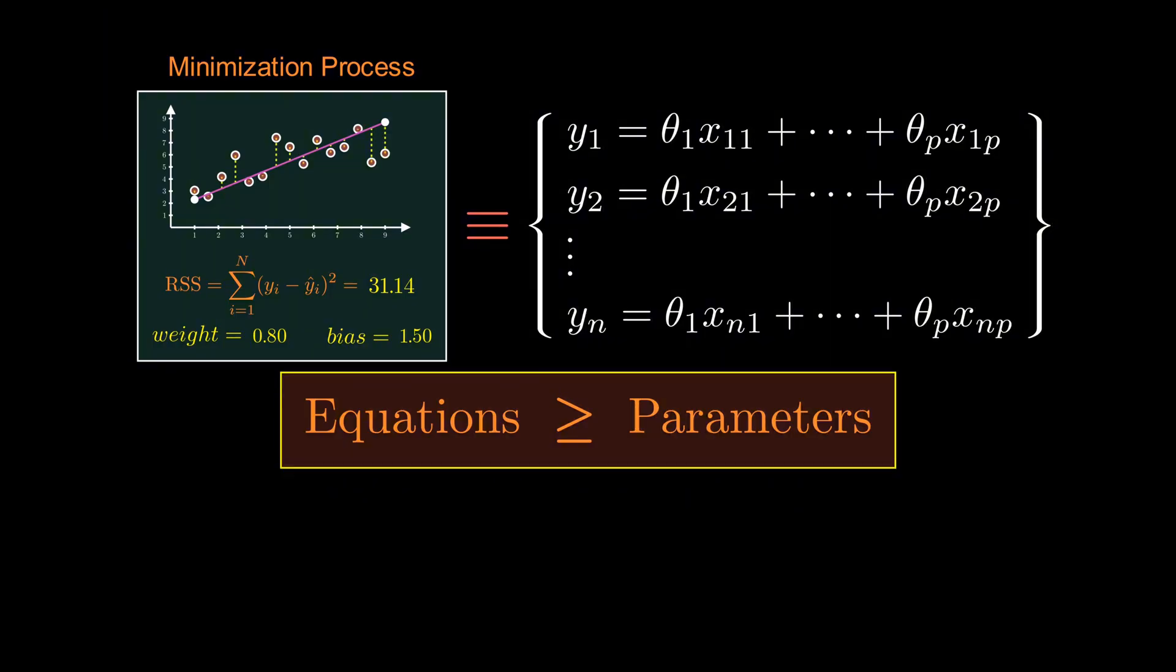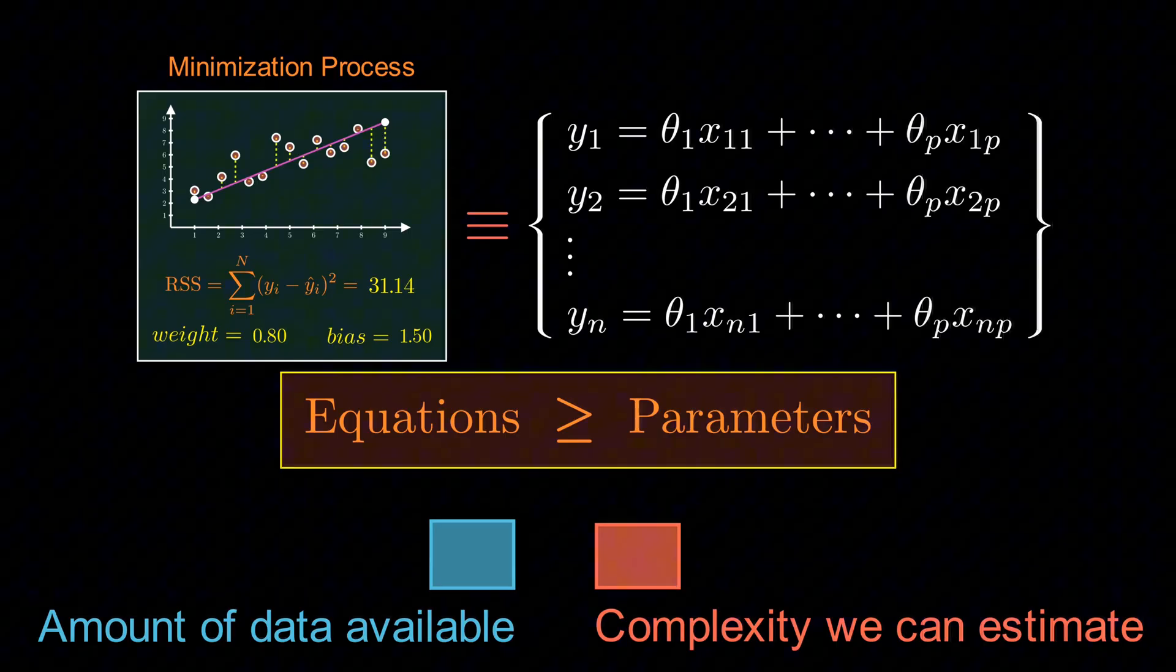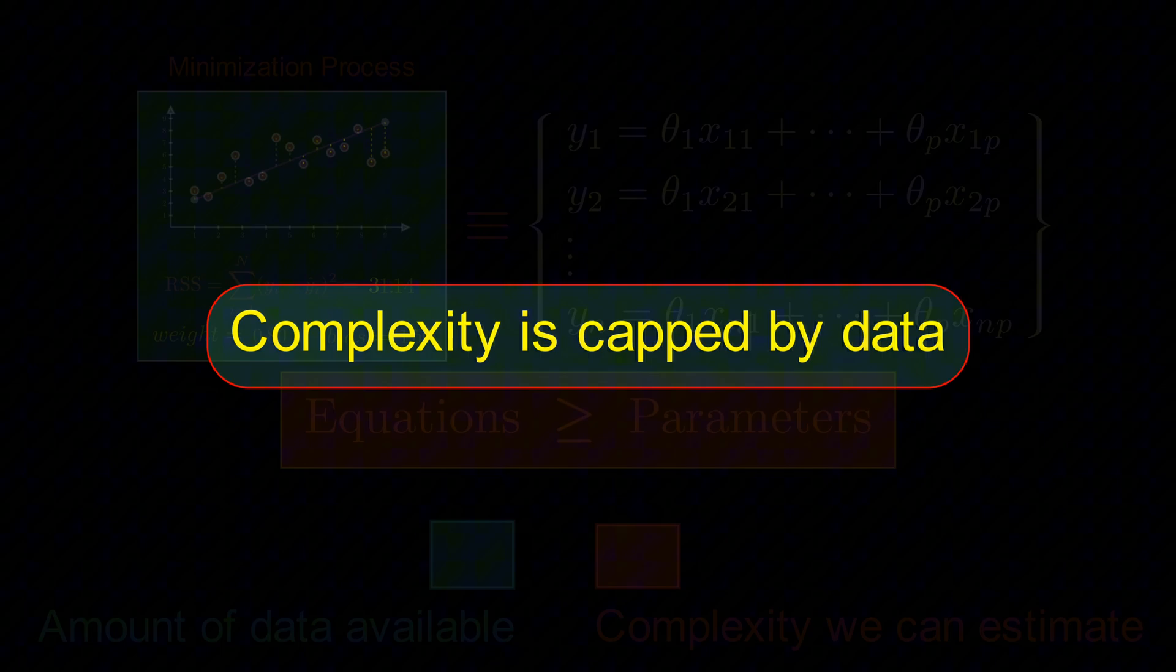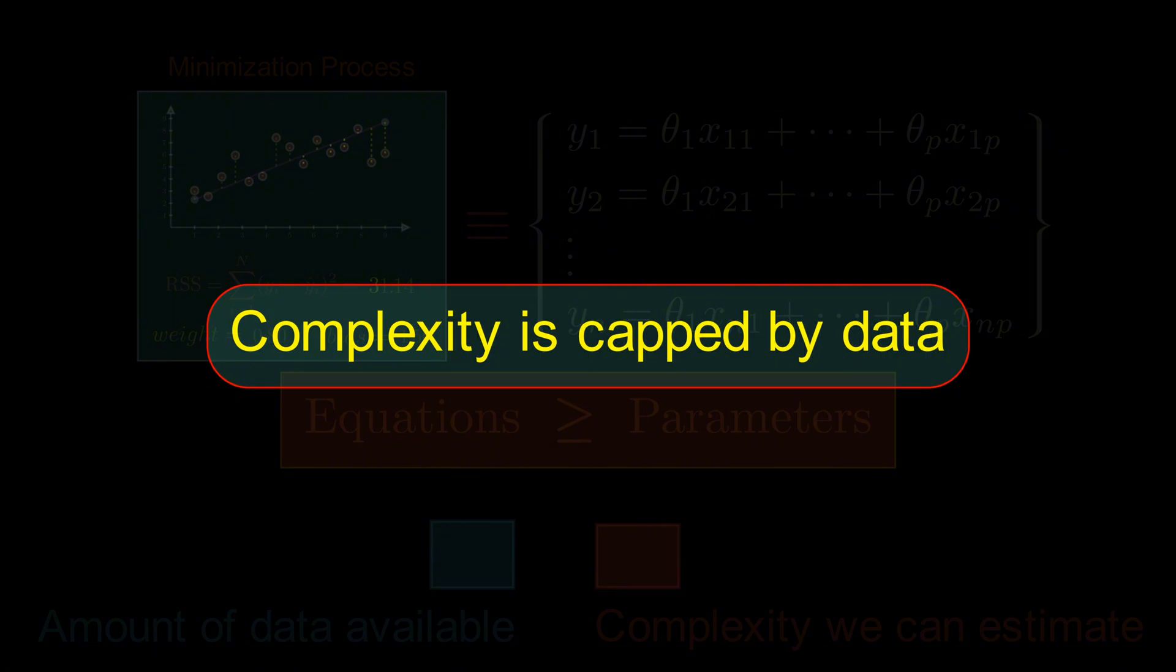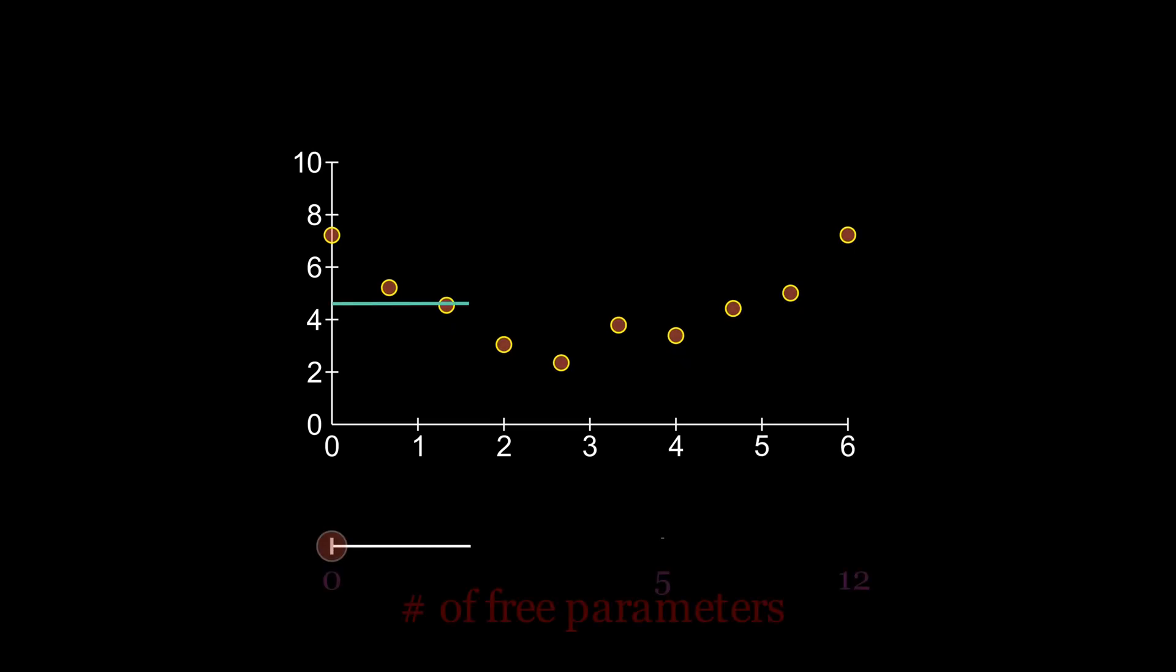In practice, that means the number of rows in a data set puts a ceiling on the number of parameters we can reliably determine. More data, more freedom. Less data, fewer parameters. This is not exact, but it captures the core intuition. The amount of data dictates the maximum complexity our model can safely have. And complexity is directly tied to the number of free parameters.